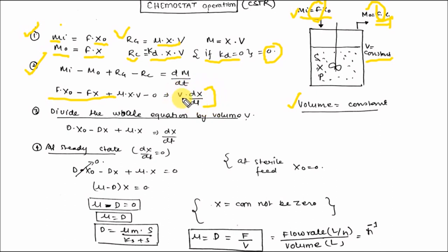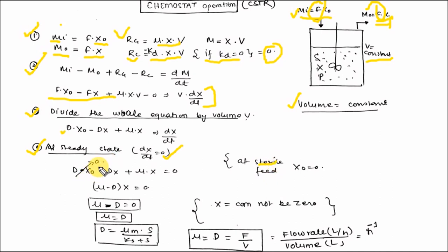Since volume is constant, it comes out of the differential term. Dividing the whole equation by volume V gives: D·X_naught minus D·X plus μ·X equals dX/dt, where D is the dilution rate. At steady state, dX/dt equals zero. If a sterile feed is used, X_naught equals zero, giving μ·X minus D·X equals zero. Since X cannot be zero (there are always cells in the reactor), we get μ equals D.